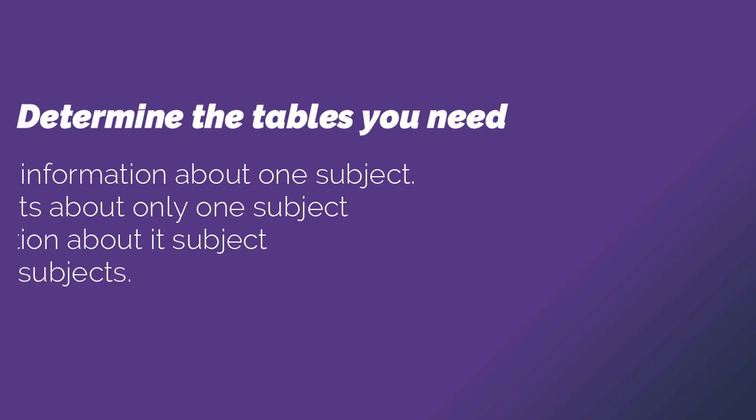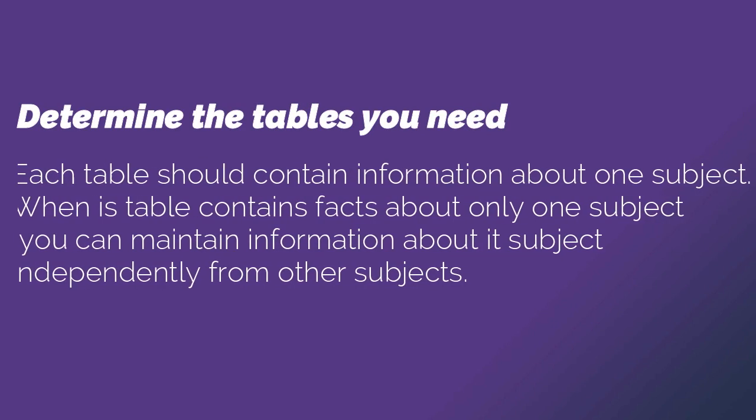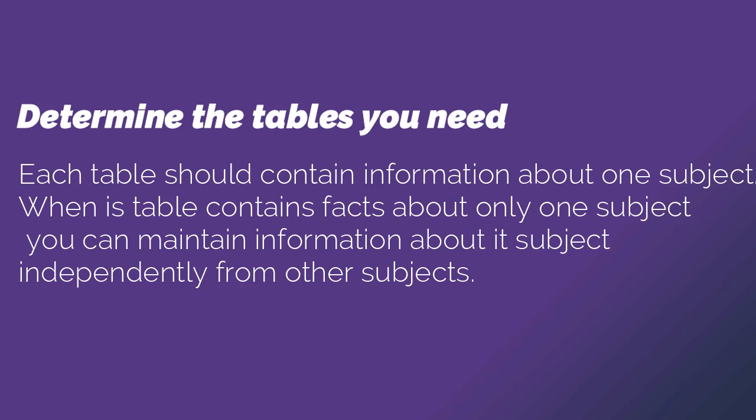Each table should contain information about one subject. When each table contains facts about only one subject, you can maintain information about each subject independently from other subjects. We will create independent columns. For example, if we have a name field, we will break it into first name and last name, and middle name if applicable. Similarly, email ID and phone number will each have their own column, so we can access the data very effectively and quickly.